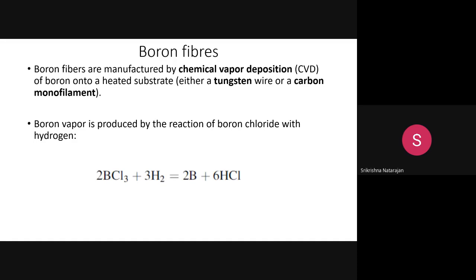We are going to see how this manufacturing process is done. From the name itself you can understand: some chemical is transformed into vapor and it will get deposited on a surface. In a high vacuum chamber, chemicals react and release a volatile substance that deposits on a surface.